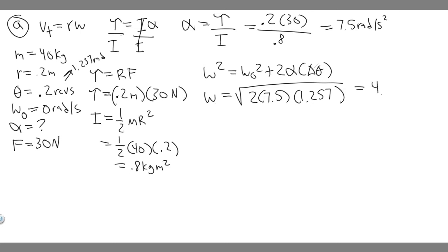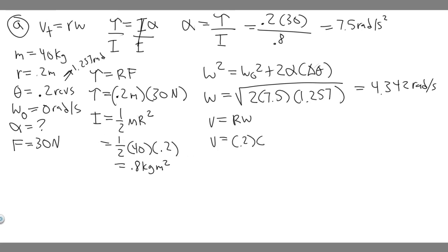Computing that gives omega ≈ 4.342 radians per second. Now we can plug into V_T = Rω: V = 0.2 × 4.342 ≈ 0.868 meters per second. The radians are unitless and cancel, leaving meters per second. So 0.868 m/s is the answer to Part A.